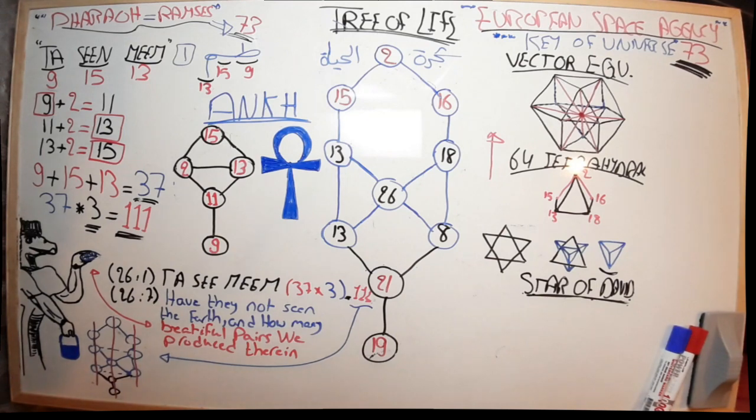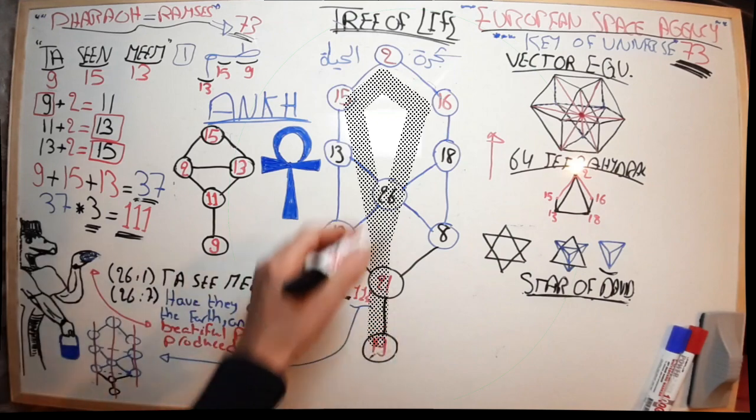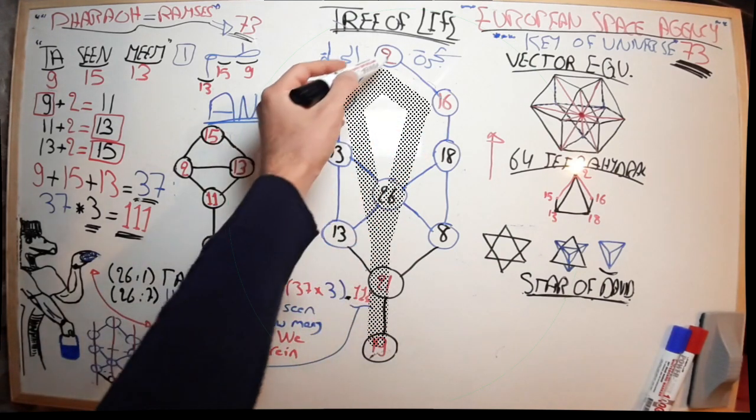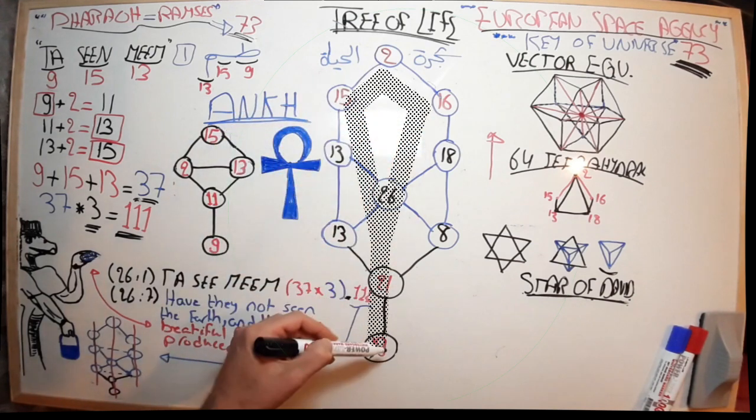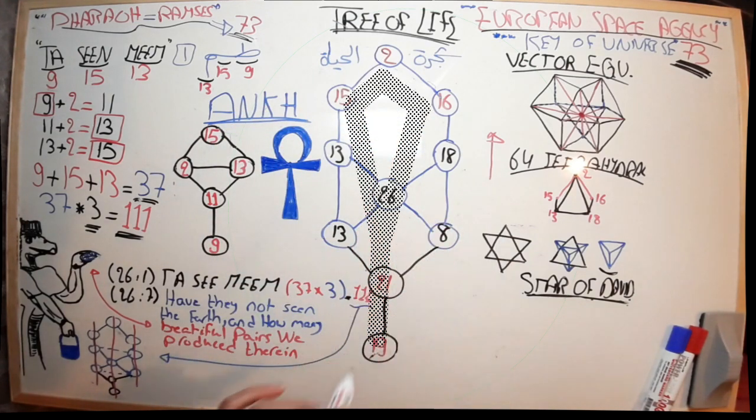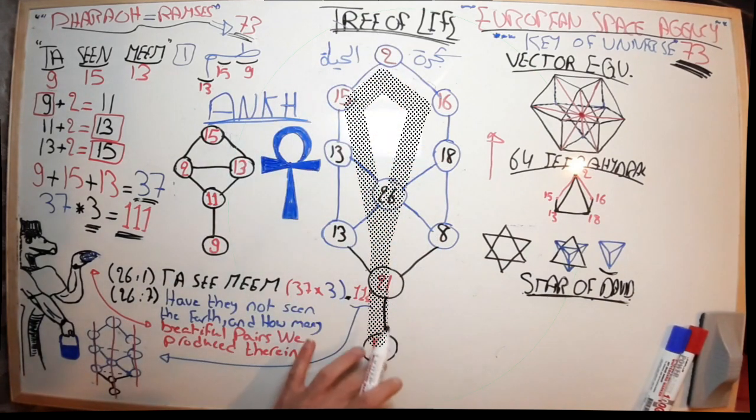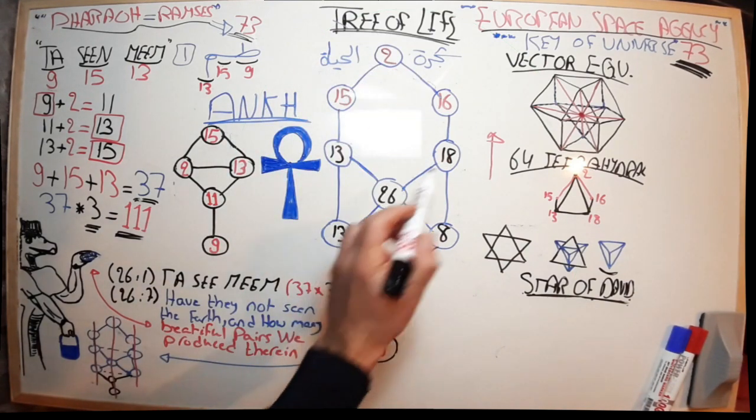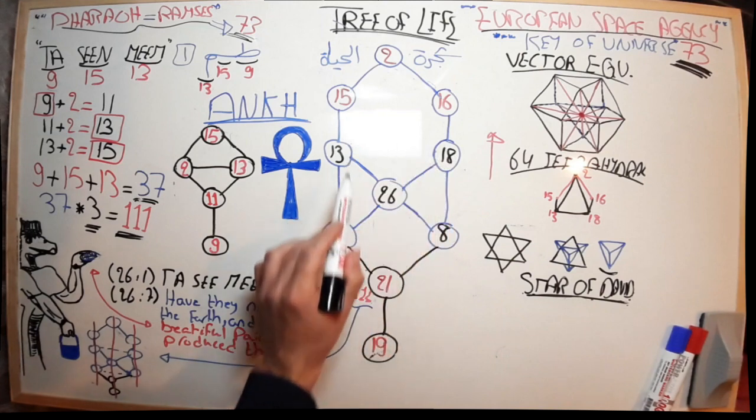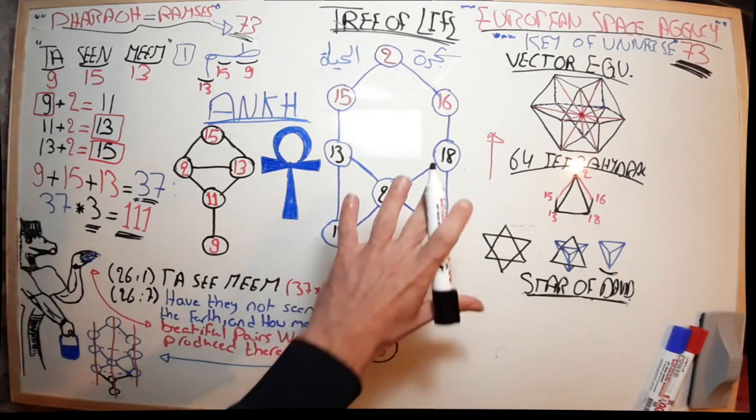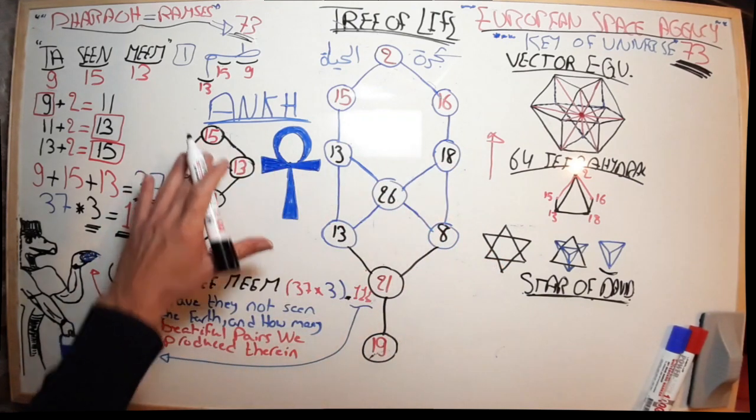If we remember last time, we talked about the Tree of Life having the codes—the key is 73. If you sum 2, 15, 16, 21, 19, that's the key in the Tree of Life, and that's the lock.